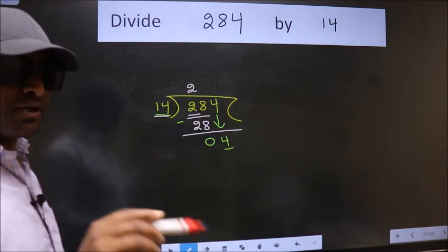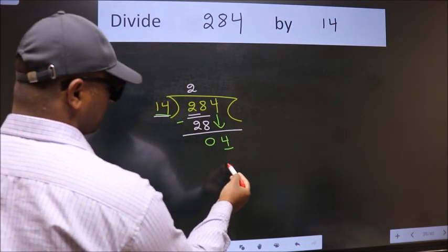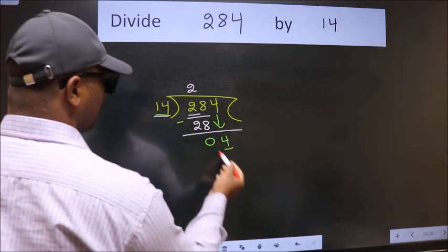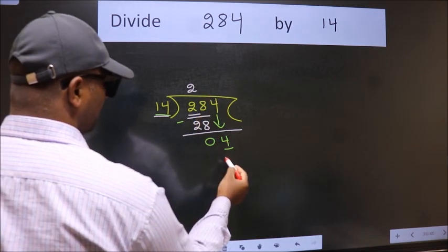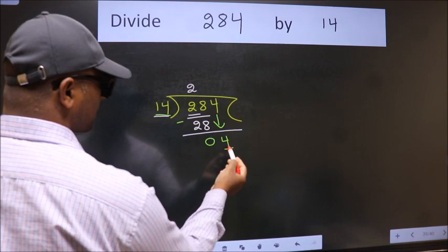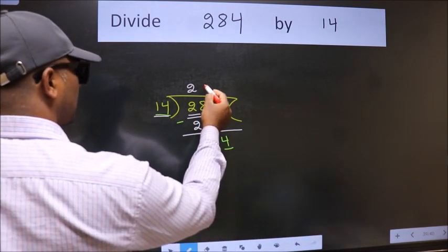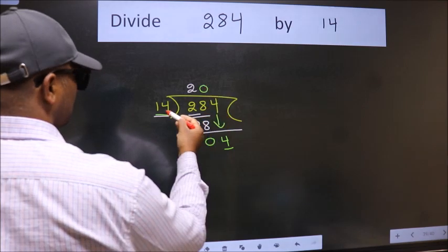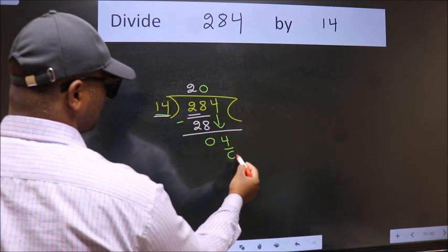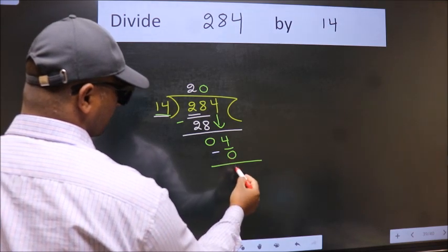Instead of that, what we should think of doing is which number should we take here. If I take 1, we will get 14. But 14 is larger than 4. So what we do is we take 0 here. So 14 into 0, 0. Now we subtract. We get 4.